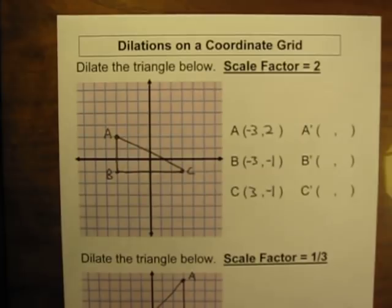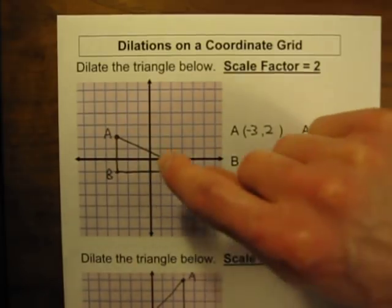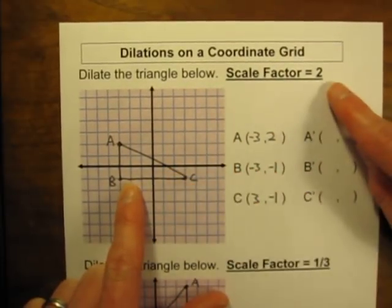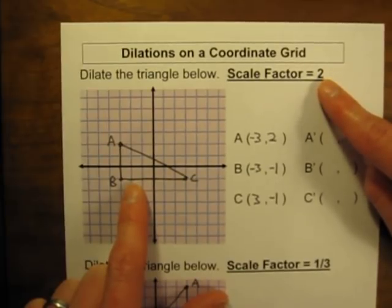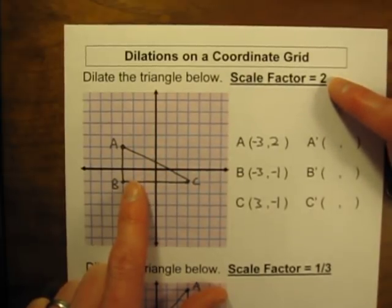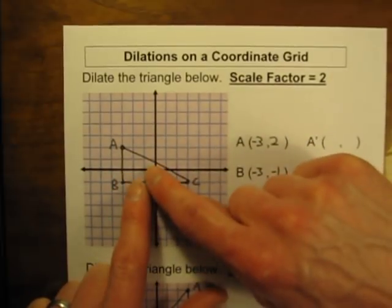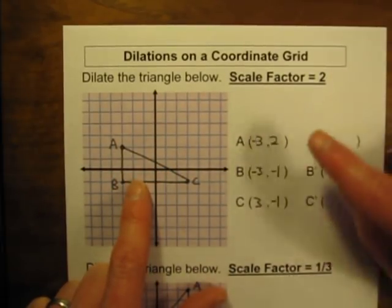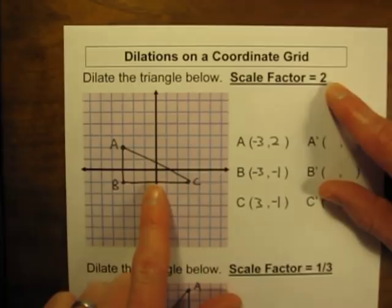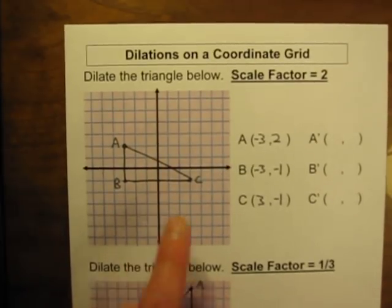These dilations always have a scale factor, and what the scale factor means is what are you going to multiply by to get your new shape? With a scale factor of 2, the new triangle will be twice as large as the original. If the scale factor is 3, we would triple it in size. If the scale factor is 4, we'd quadruple it. So here with a scale factor of 2, we're going to be doubling it in size.